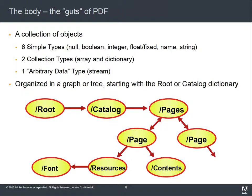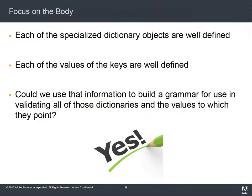Let's focus on the body — where the majority of the PDF objects live. There are nine different types of objects: simple types, collections, and stream data, organized into a nice tree starting at the root catalog going down throughout the object tree of the file. Each one of these objects is well-defined in 32,000. It says what keys can and cannot be present, what the values of each key are, what type each value is, when they were introduced, when they're optional, when they're required. Guess what? That's a grammar.